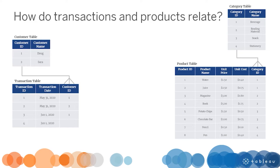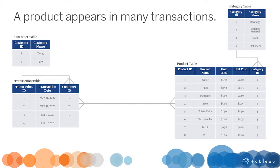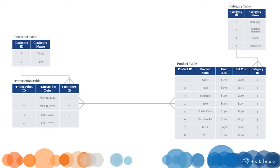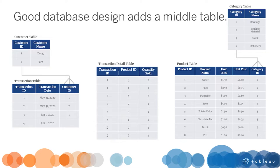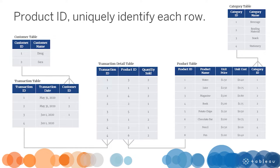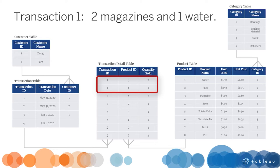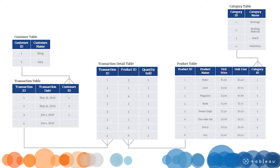How do transactions and products relate? A transaction can have many products, and a product can appear in many transactions — this is a many-to-many relationship. Since there is no common field between the two tables, good database design resolves this by adding a transaction detail table in the middle. Transaction ID combined with product ID uniquely identify each row, and the quantity sold is also recorded.